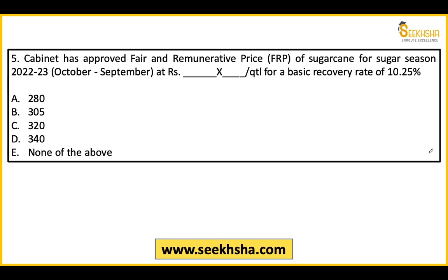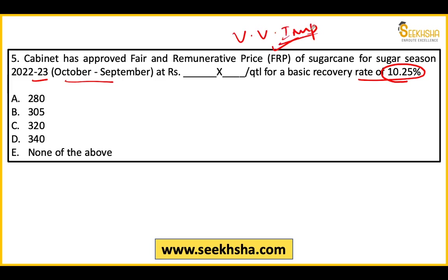Question 5: Cabinet has approved the Fair and Remunerative Price (FRP) of sugarcane for sugar season 2022-23, that is October 2022 to September 2023. The FRP is for the basic recovery rate of 10.25%. The right answer is Option B — 305 rupees per quintal.